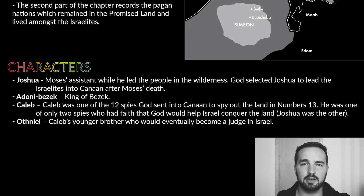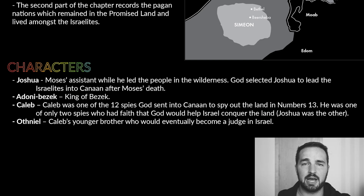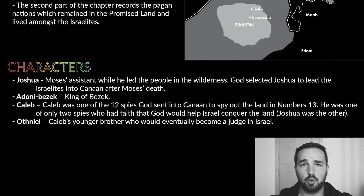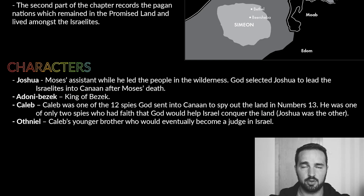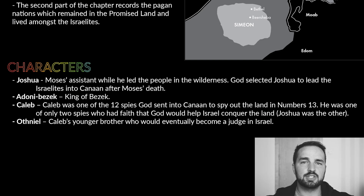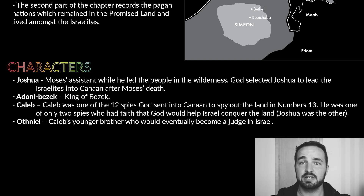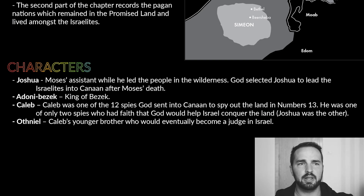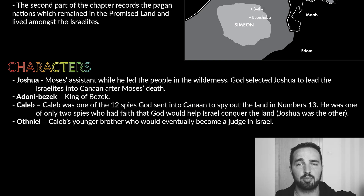Now we move to the main characters featured in this chapter. The first is Joshua. At the end of Joshua chapter 24, Joshua died, but he's reintroduced here and in chapter two because they are linking the two books together. Joshua was the leader of the Israelites who led the conquest. He had been Moses's longtime assistant for years and was actually present when the Israelites left Egypt — he saw the ten plagues, went through the 40 years wandering in the wilderness, and then led the people into Canaan to finally inherit the promised land.